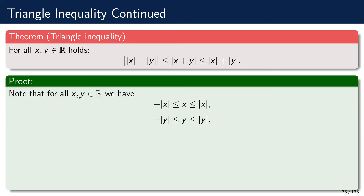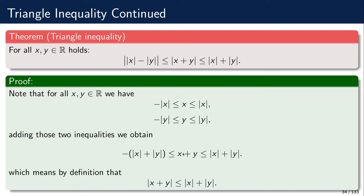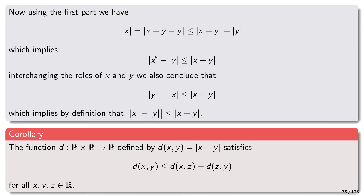For any real number x, we have that x is between minus|x| and |x|: if x is positive then x equals |x|, and if x is negative then x equals minus|x|. So this inequality holds for every x. Similarly for y. Adding those inequalities, we get that x + y has to be between minus(|x|+|y|) and (|x|+|y|). By the definition of absolute value, this means |x + y| ≤ |x| + |y|. We've proved the first part.